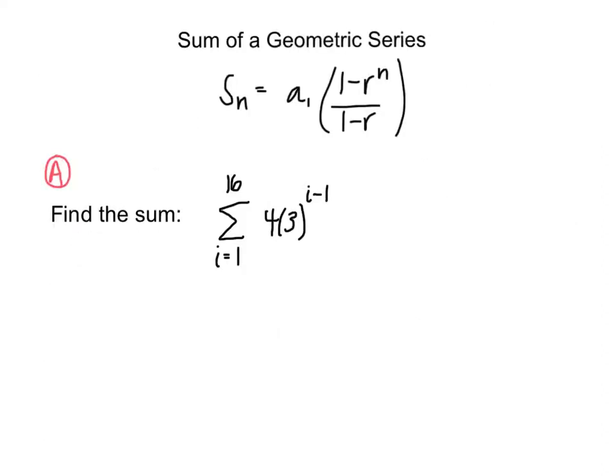So like we have a sum of an arithmetic series, we have a sum of a geometric series as well. This has a formula of s sub n equals a sub 1 times the quantity of 1 minus r to the n over 1 minus r.